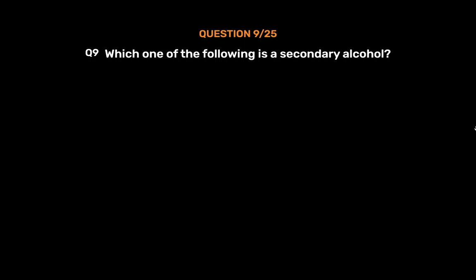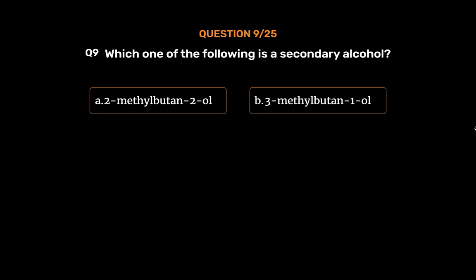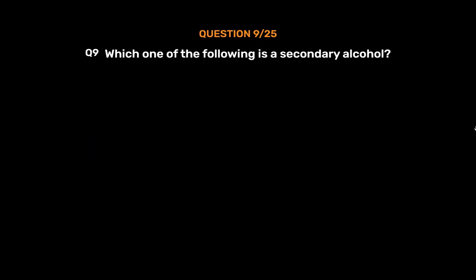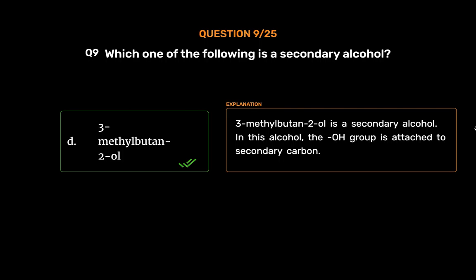Question number 9. Which one of the following is a secondary alcohol? Option A, 2-methyl-butan-2-ol; Option B, 3-methyl-butan-1-ol; Option C, 2-methyl-butan-1-ol; Option D, 3-methyl-butan-2-ol. The correct answer is Option D, 3-methyl-butan-2-ol. 3-methyl-butan-2-ol is a secondary alcohol — the OH group is attached to a secondary carbon.